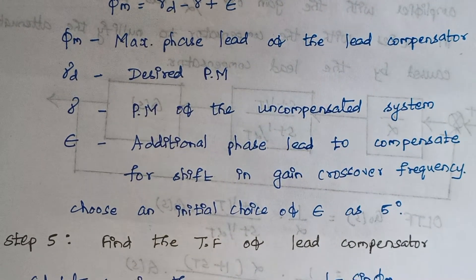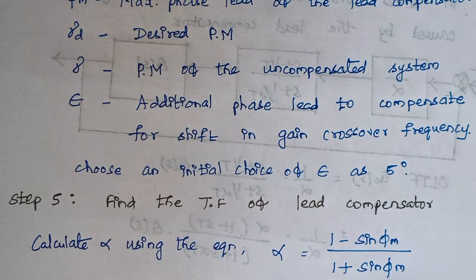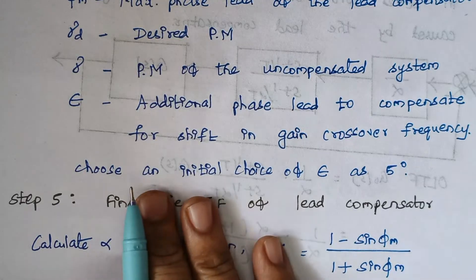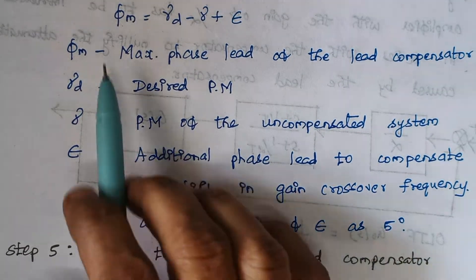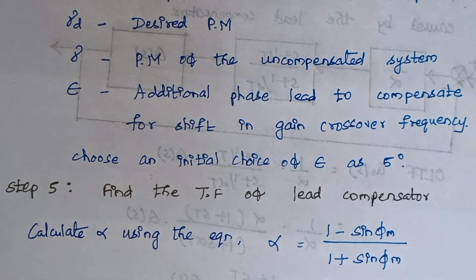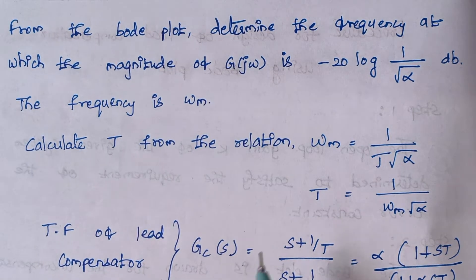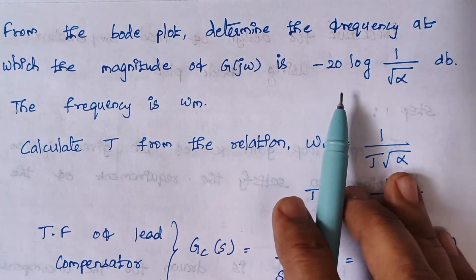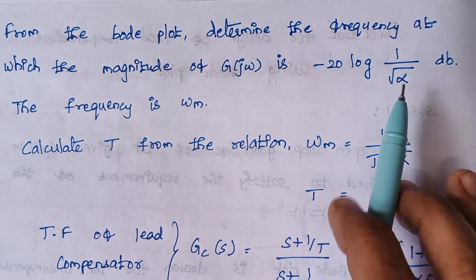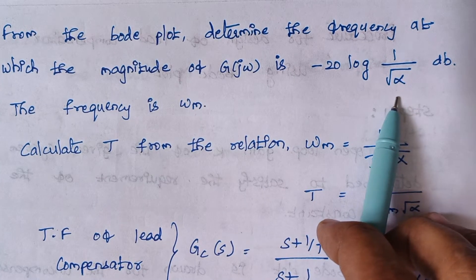Step 5 is to find the transfer function of the lead compensator. Initially we have to find alpha, which is given by: alpha = (1 minus sin(phi_m)) divided by (1 plus sin(phi_m)). We have already calculated the value of phi_m in the previous step, so just substitute and calculate alpha. Next, from the Bode plot, determine the frequency at which the magnitude is minus 20 log(1 divided by square root of alpha). Substitute the value of alpha to find this frequency.